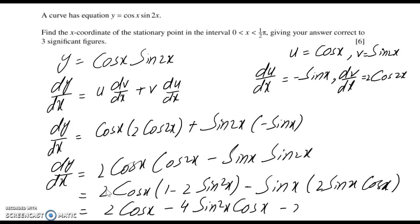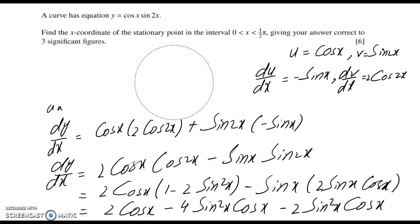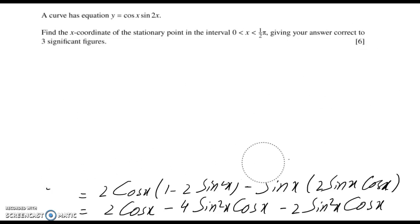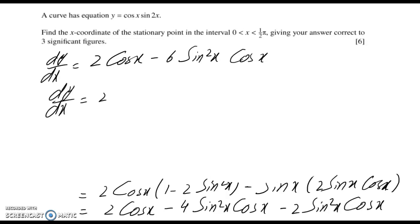We can simplify further because there is a common factor. This becomes -6sin²x cos x. We can factor out 2 cos x, so this can be written as 2 cos x(1 - 3sin²x).